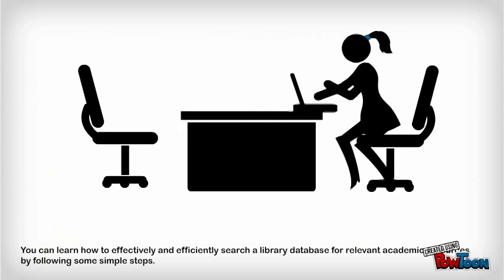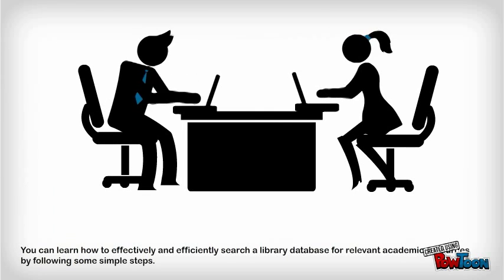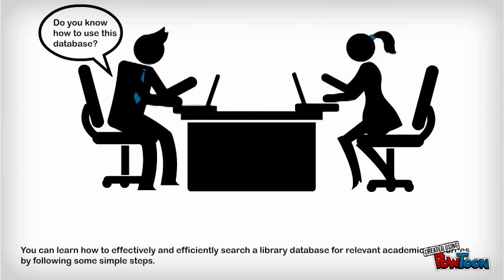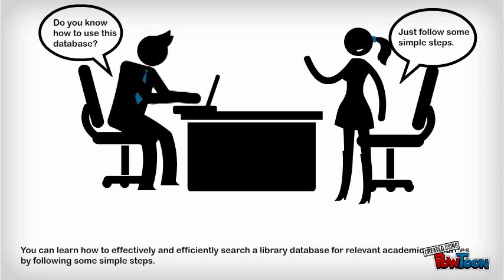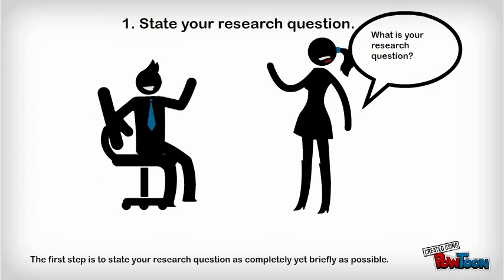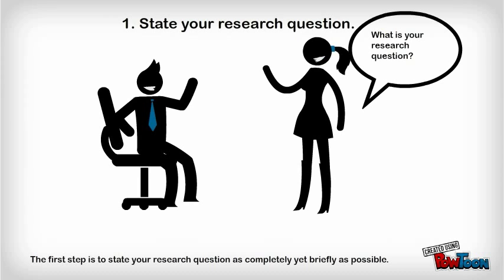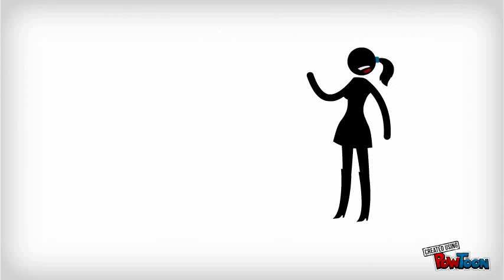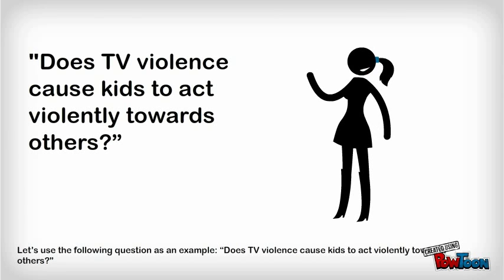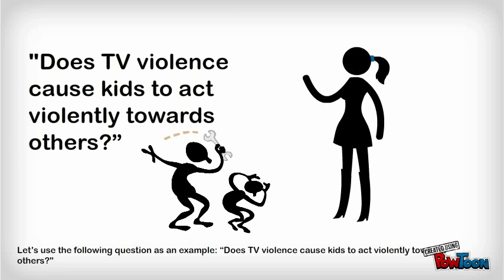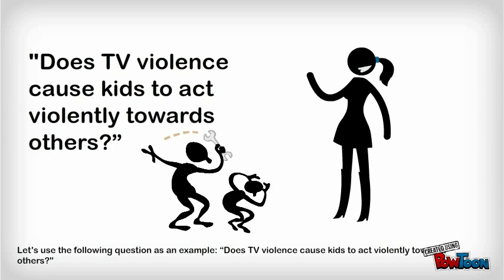You can learn how to effectively and efficiently search a library database for relevant academic resources by following some simple steps. The first step is to state your research question as completely yet briefly as possible. Let's use the following question as an example: Does TV violence cause kids to act violently towards others?